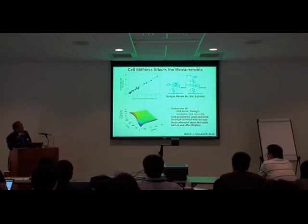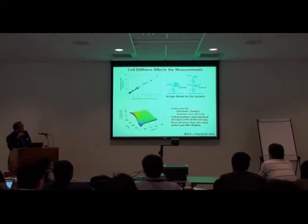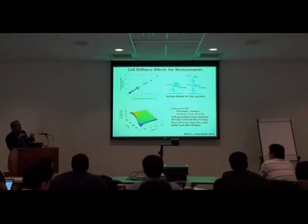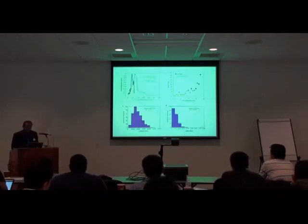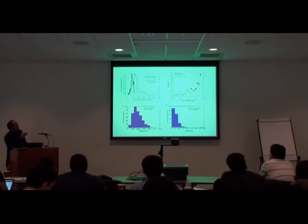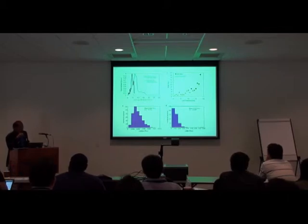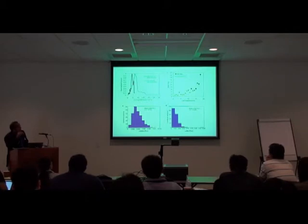If you take the equations from this data and make certain assumptions, you have about six unknowns: cell mass, Young's modulus before and after fixation, and viscosity before and after fixation. You use this data and make certain assumptions, then use this model to extract the cell parameters. You also need geometries from confocal imaging, and you assume the real cell mass stays the same before and after fixation. These were HT29 cells, a cancer cell line, and we extract the Young's modulus to be around 4 to 5 kilopascals in the unfixed state.